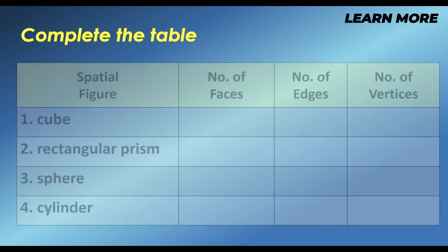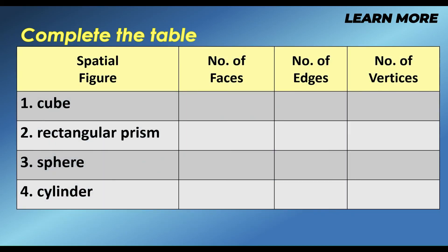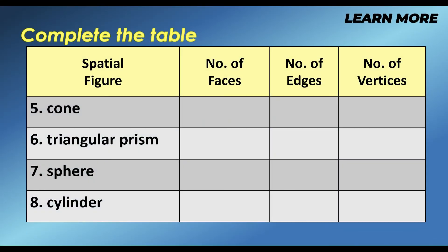Let's learn more. Try to solve the problem by completing the table. Write the number of faces, edges, and vertices of the spatial figures shown in the first column. We have cube, rectangular prism, sphere, and cylinder. Cone, triangular prism, sphere, and cylinder. Once you're done, you may check your answers in the description down below. Enjoy and good luck. See you in the next video.